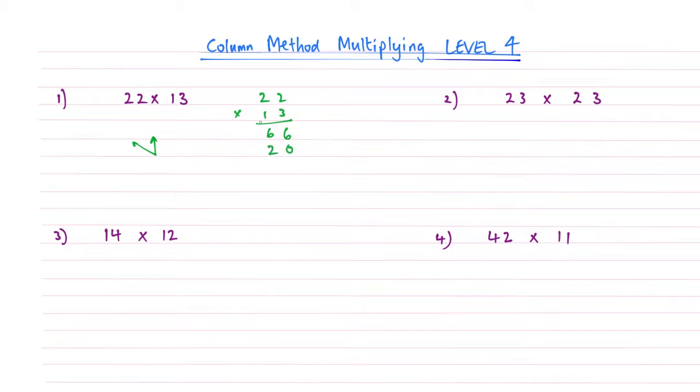1 times 2 is 2, and then I multiply upwards, 1 times 2 is 2. And then we're going to add these two together. So 6 add nothing becomes 6, 6 add 2 is 8, and then 2 on its own just becomes 2. So the answer to number 1 is 286.